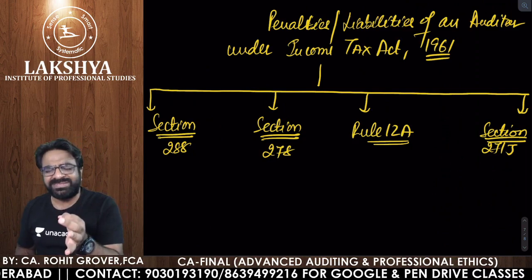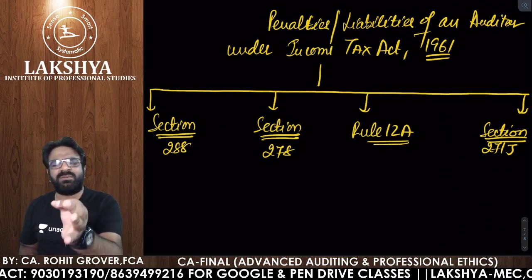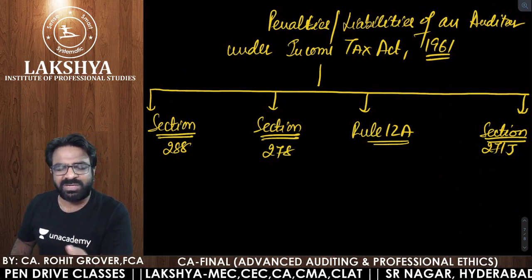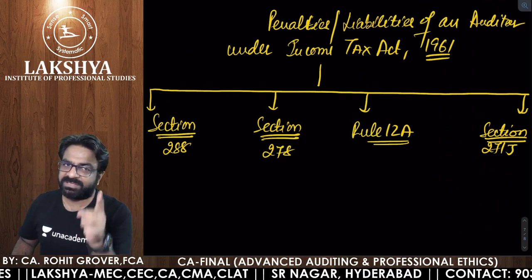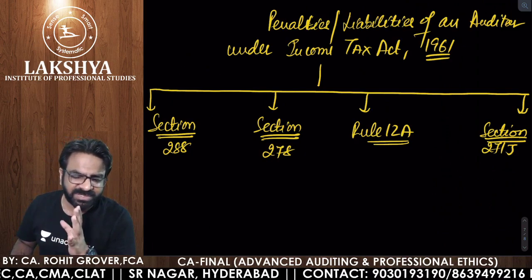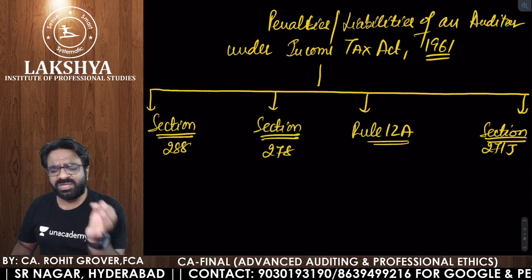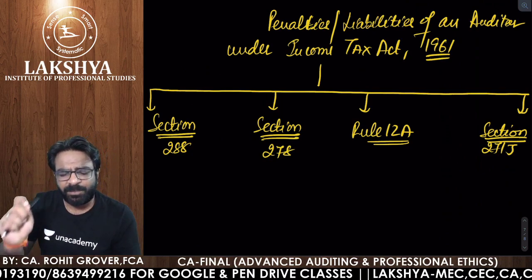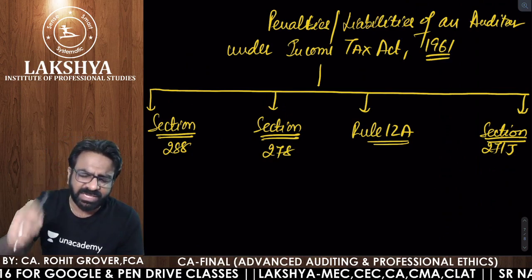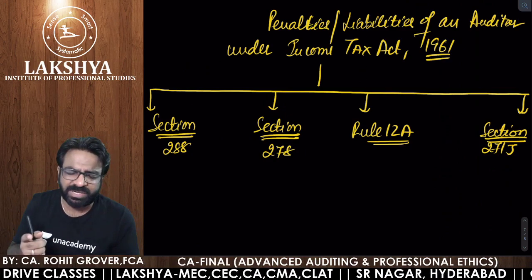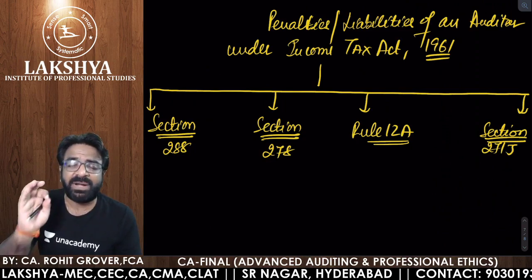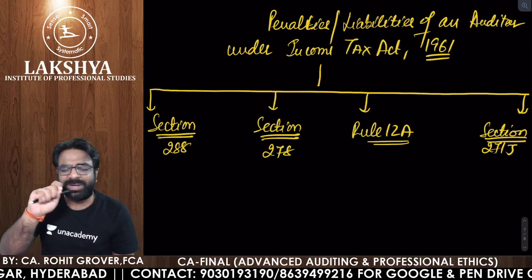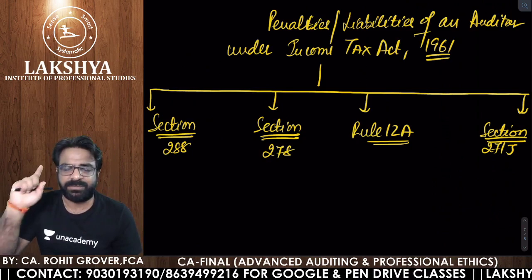Rule 12A: if you were supposed to give any information to the income tax authority, gave that certificate or statement, but you already knew that the information was untrue and you believed it to be false — there will be a penalty. Section 271J: a newly inserted section under the amendment act 2017 — if you are a merchant banker, registered valuer, or chartered accountant who issued any statement or report to an assessing officer and that report contains incorrect information you already knew to be incorrect — the penalty is ₹10,000 per report or certificate issued.